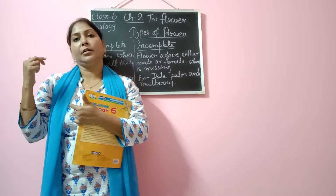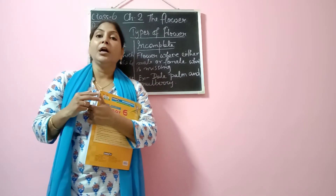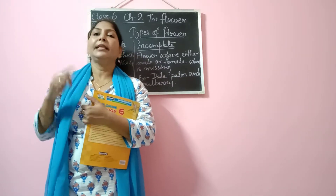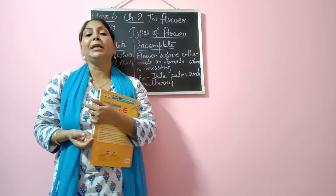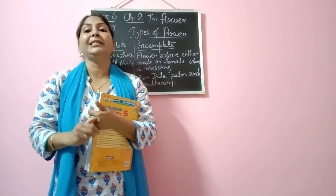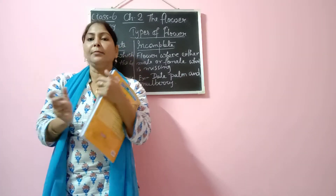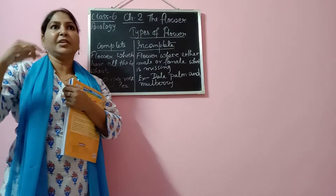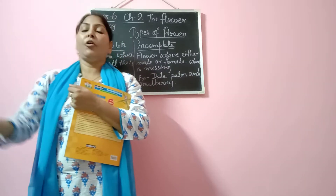After that, we discussed about the third whorl of the flower, that is androecium, which is the male reproductive part and consists of two parts — filament and anther. Then we discussed about the fourth whorl, gynoecium, which is the female reproductive part, made up of three main parts: the top part is stigma, then a tube-like structure known as style, and then the swollen part known as ovary. Inside the ovary, ovules are present. The future of the flower is fruit, and from the fruit, the ovules form the seeds.